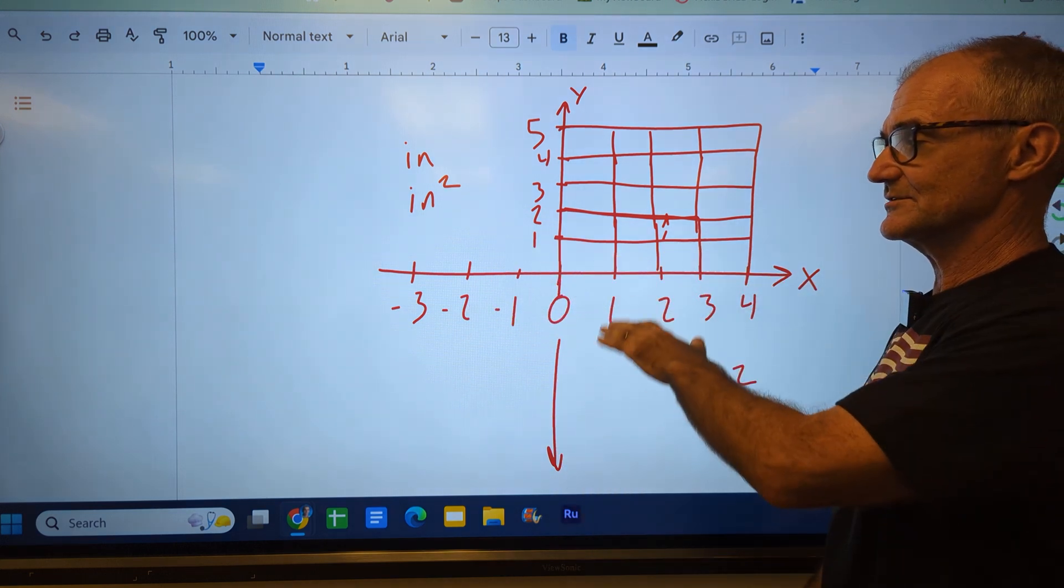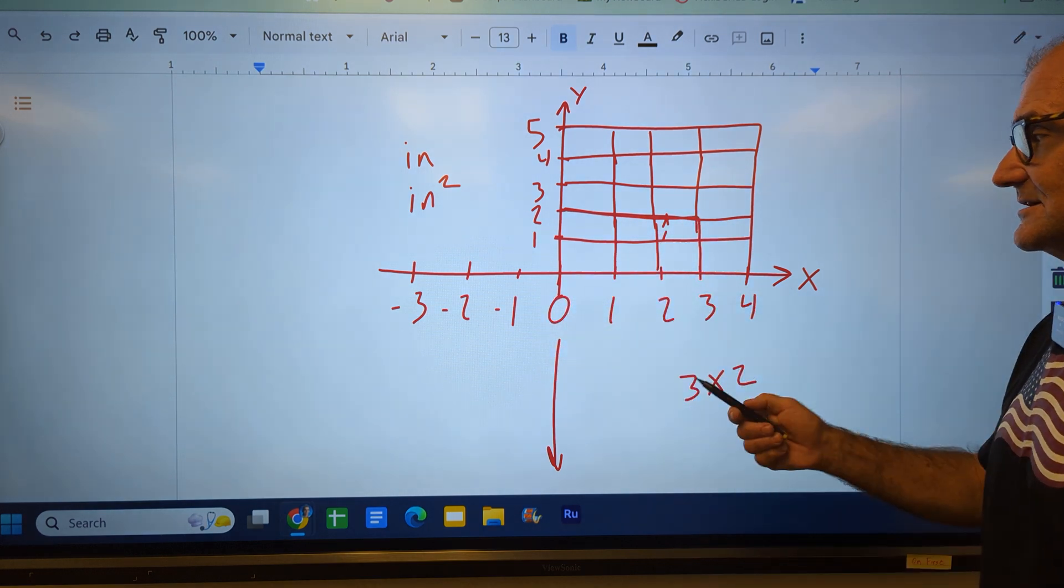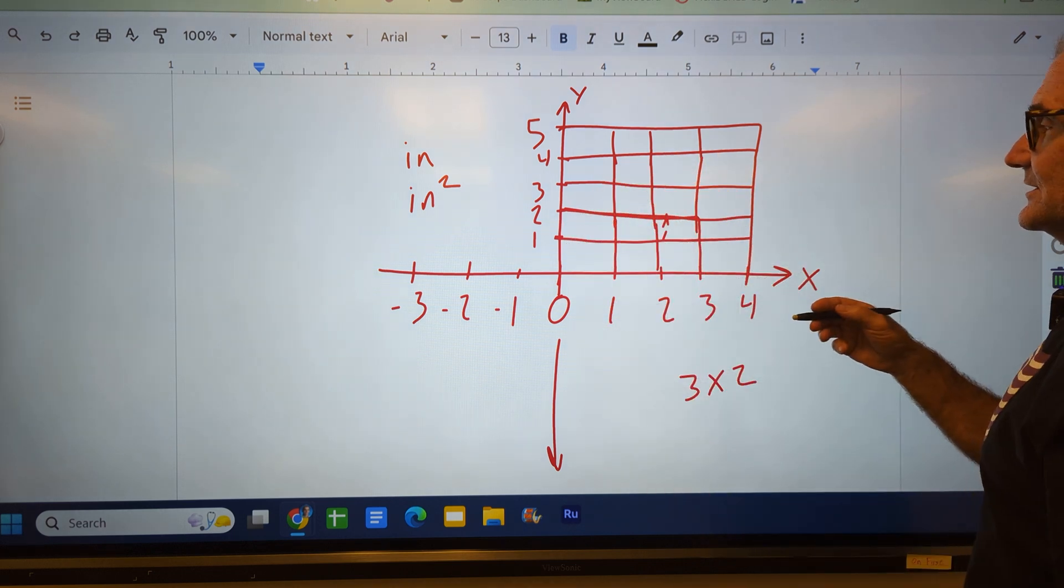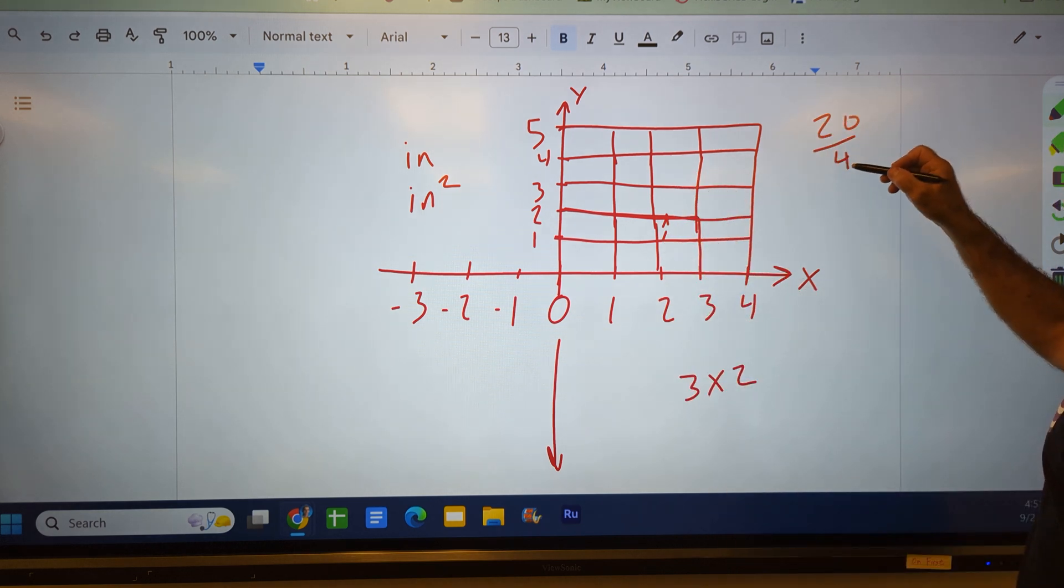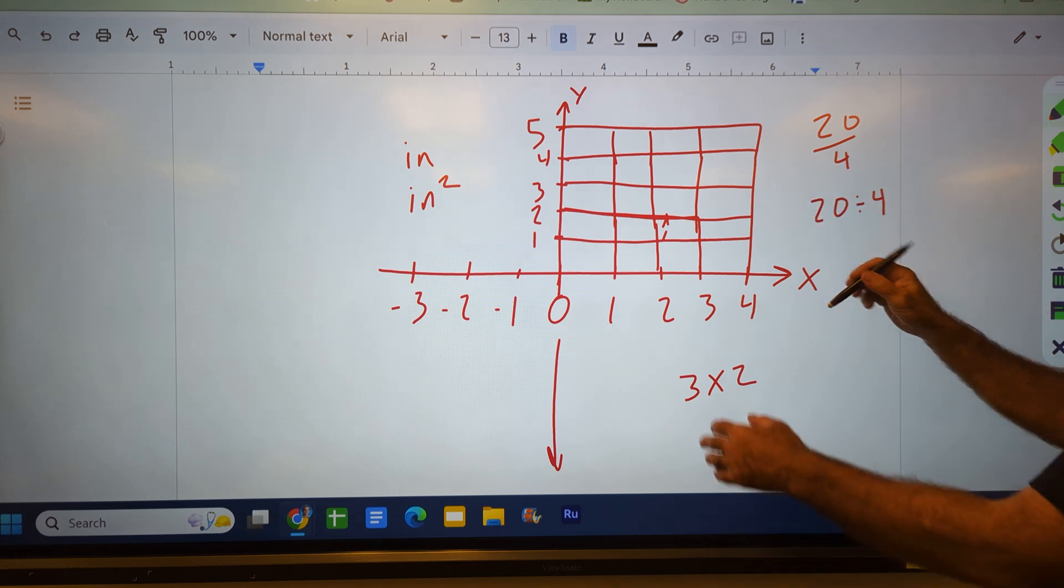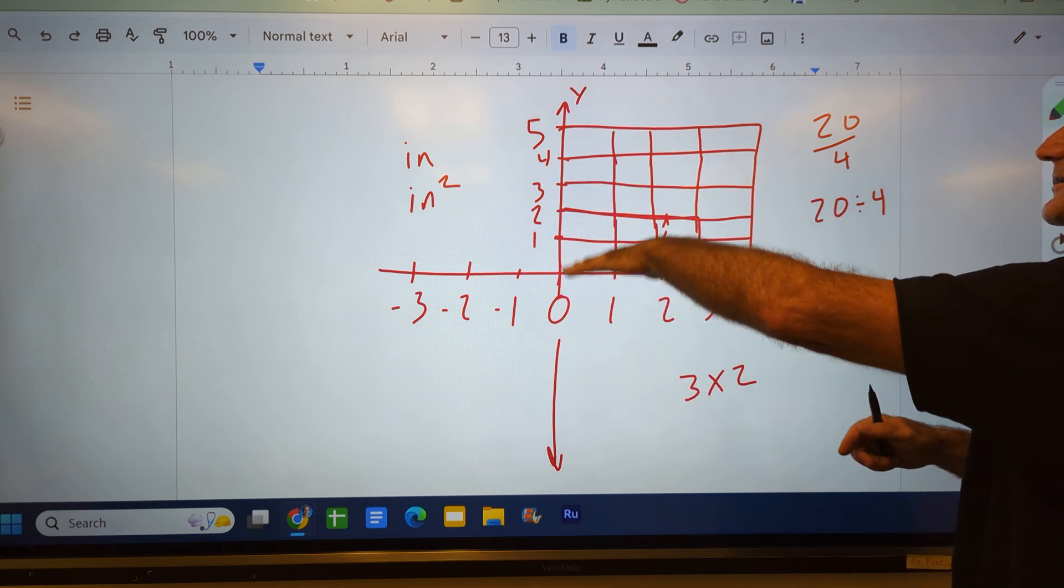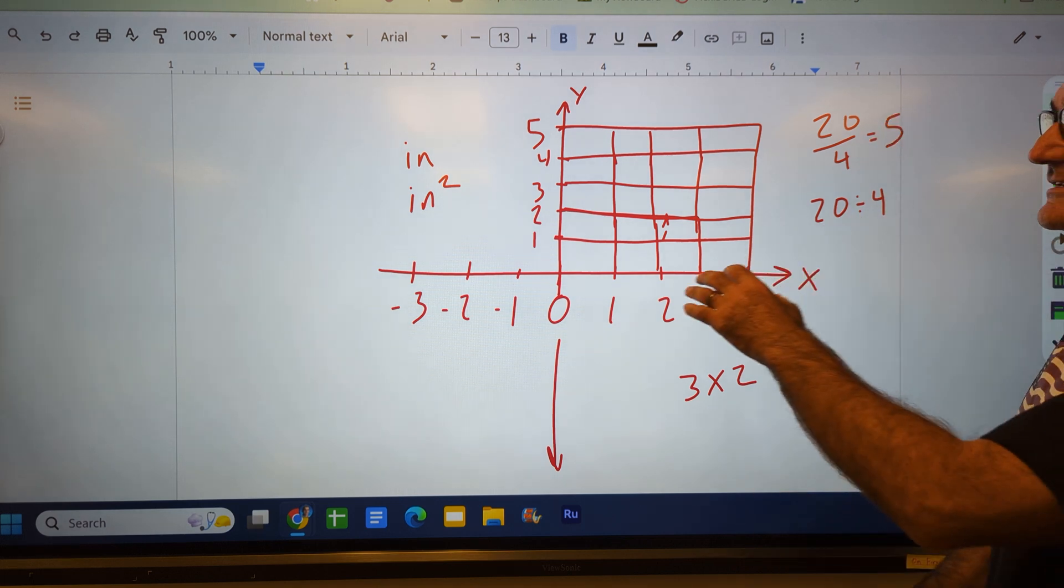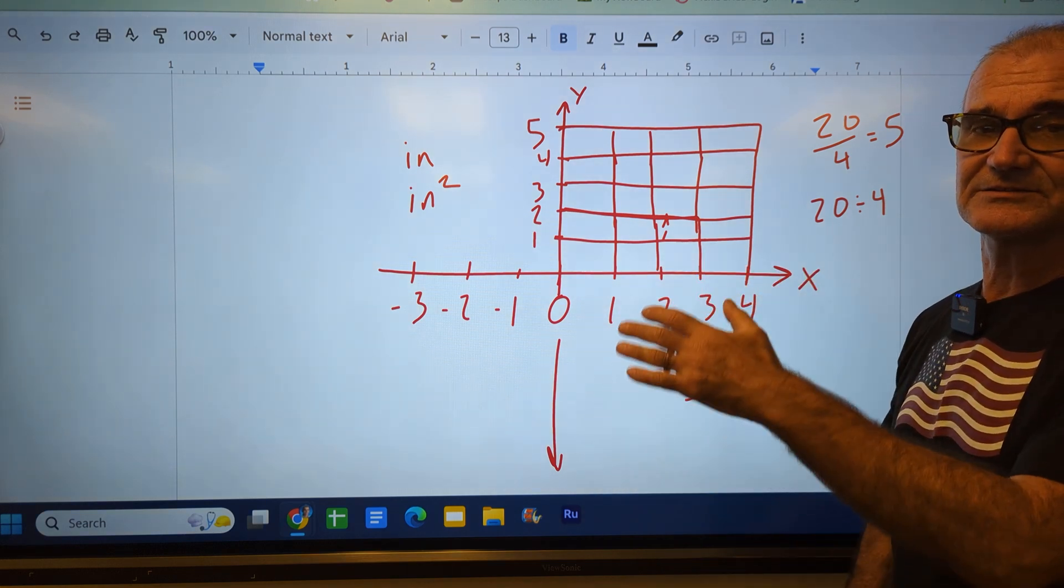Just like subtraction reverses addition, division reverses multiplication. So it's like saying 4 times what number will give me 20 squares? So what I'm saying is 20 divided by 4 will tell me how many. I have to write it like that as a fraction, or 20 divided by 4. What I'm saying is I've got 20 squares, I've got a set of 4. How many rows do I need? And that's equal to 5. The key to doing this and long division and long multiplication is you've got to know your multiplication tables, 10 by 10.